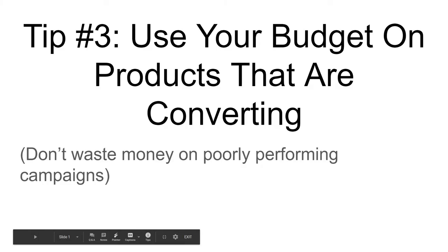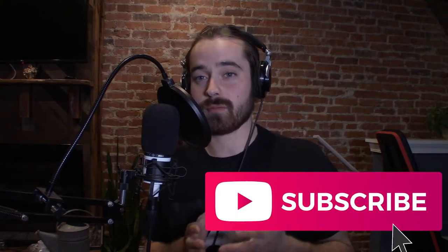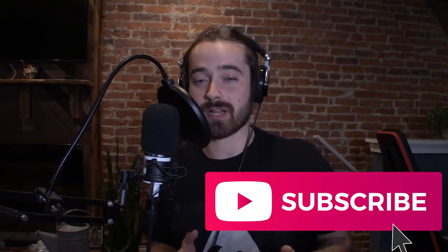Tip number three: make sure you are using your budget on ad groups and product groups that are converting. This happened to me where I was spending most of my daily budget on products that had never gotten a sale, while not spending on product groups that were actually converting well. I went inside my campaigns and lowered those bids way down — even paused some of those product groups — so I could allocate funds toward products that are actually converting really well.